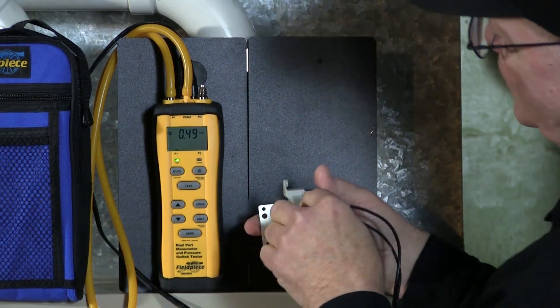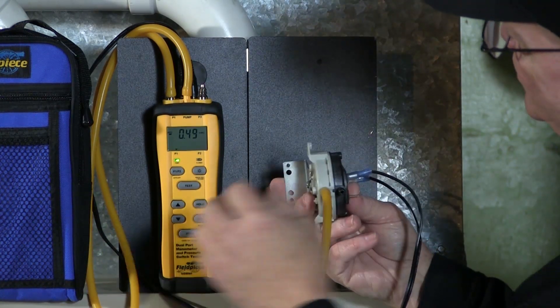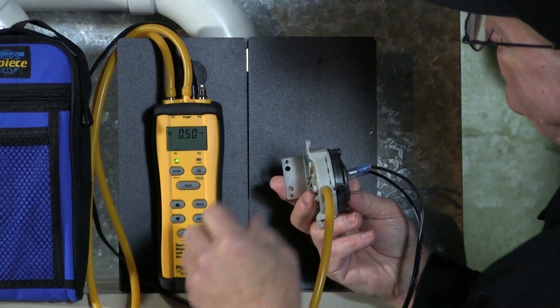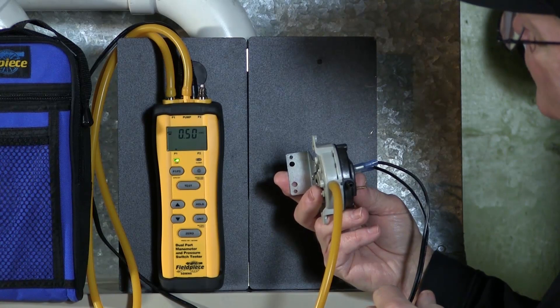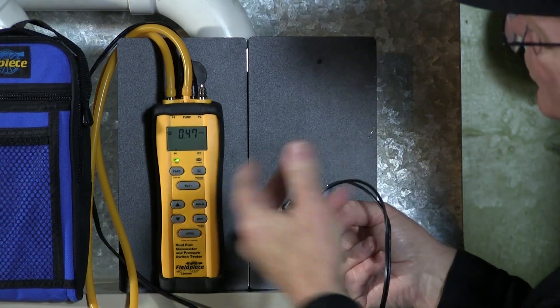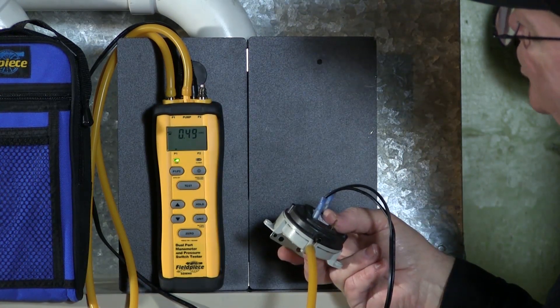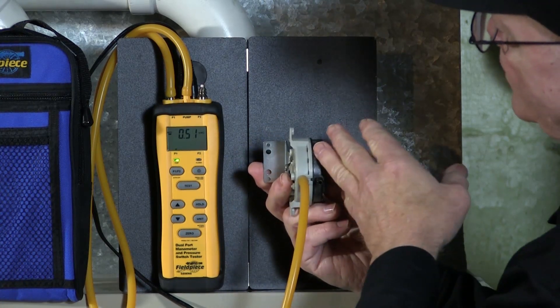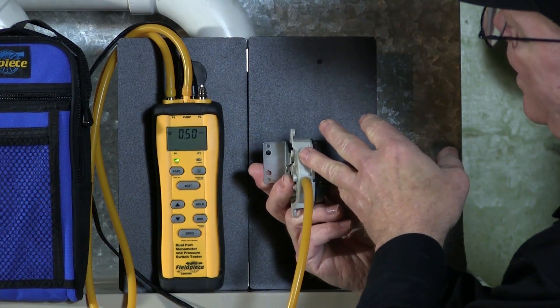Now, it's important to note that when you're testing these pressure switches, I'll take this one up just a teeny bit, and we're at 0.50. If you hold it at an angle, you're going to change. You see how that changed? If you hold it straight up, then you're going to get the accurate reading, because that's how it mounts in the furnace.